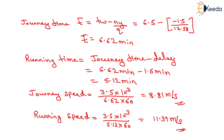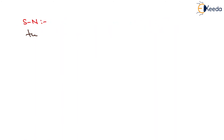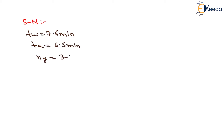Now we have to solve this for south-to-north direction. TW will be equals to 7.6 minutes, TA will be equals to 6.5 minutes, NY will be equals to 3 minus 2 equals 1, and NA will be equals to 272, which is given by the observer of the opposite side.